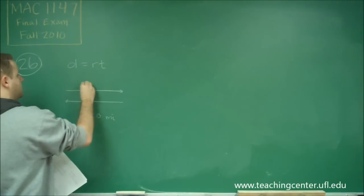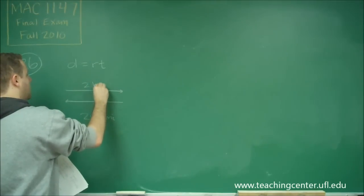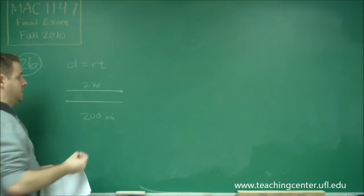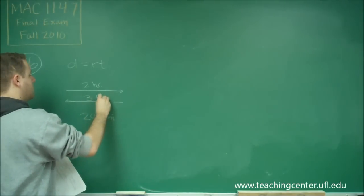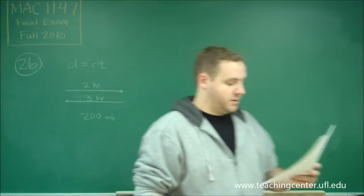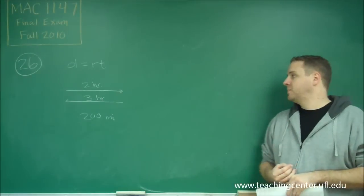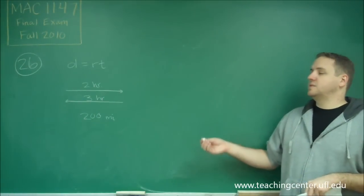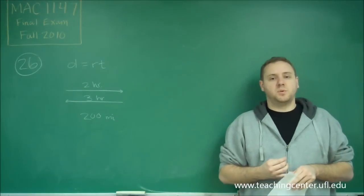But the first one took two hours, that's with the current, and the return trip took three hours, so that one's going to be against the current, because it took longer. So we want to find the speed of the current. So just using this information, we can definitely build a system of equations.